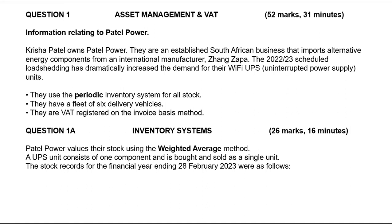They are an established trading business that involves alternative energy components from an international manufacturer, Zang Zaka. The 2022-2023 scheduled load shedding has dramatically increased the demand for their Wi-Fi UPS, which is uninterrupted power supply units. They use a periodic inventory system for all stock. They have a fleet of six delivery vehicles. They are registered on the invoice basis method. For now, the most important part, especially for question one, is the periodic inventory system.